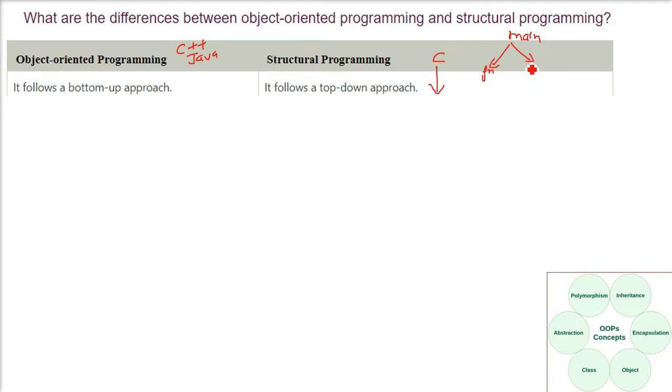Object-oriented programming is a bottom-up. First you decide what you have to do at a lower level, like you make classes, and then you combine them, collaborate them, interface them.